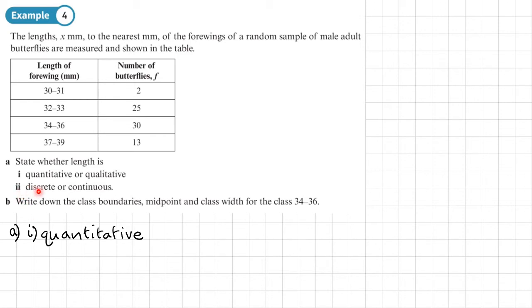And the second part of part A, is it discrete or continuous? Well, the length can take any value. So that means that it's continuous. And normally things that you measure are continuous. Things that you count are discrete. Normally that's a helpful way of thinking of it.